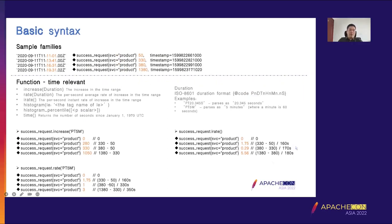Here is a group of sample families from different times, because the following function examples are time-relevant. These include increase, rate, i-rate, histogram, histogram percentile, and time. The increase function calculates the increase over a time range. For example, this calculates the increase over five minutes. The first result is 0, the second result is 330 minus 50, and the third result is 380 minus 50, because they fall within a five-minute window.